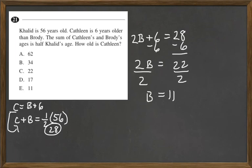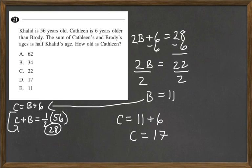So if Brody is 11, we have to come back to this equation here. Remember, we want to know how old Kathleen is. Well, Kathleen is equal to B, which is 11, plus 6. So C equals 17. So our answer choice is D.